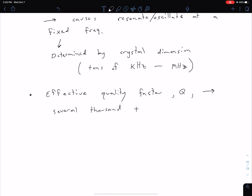If you recall from ENG 301 when we were talking about series and parallel resonance, we said that a quality factor of Q greater than 10 was a high quality circuit. Here we're talking about Q several thousand or higher. So these are very high quality circuits in terms of selectivity, in terms of having just one specific frequency.